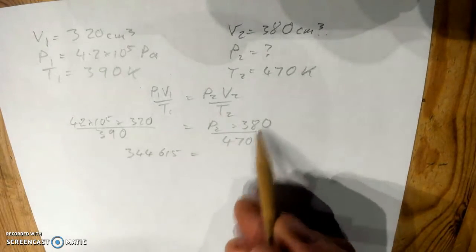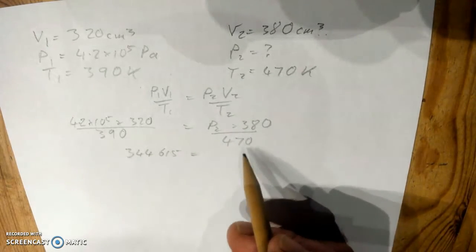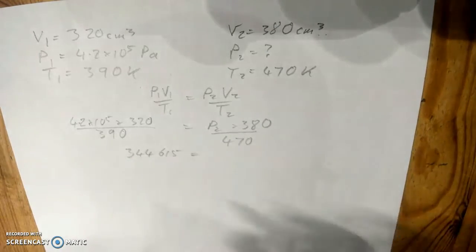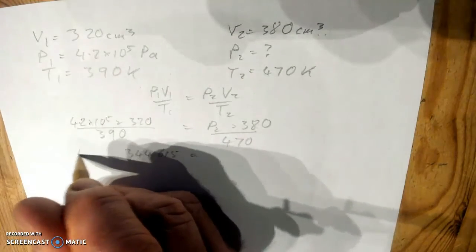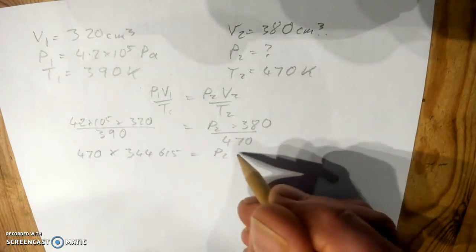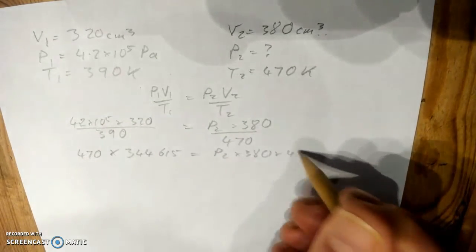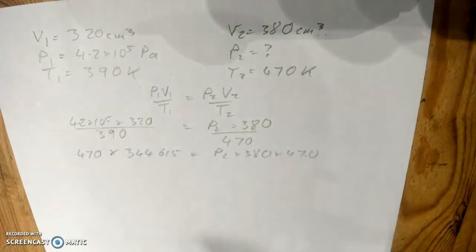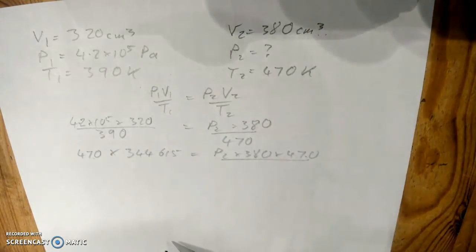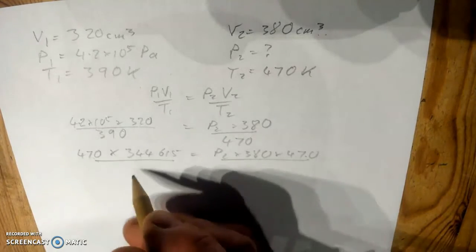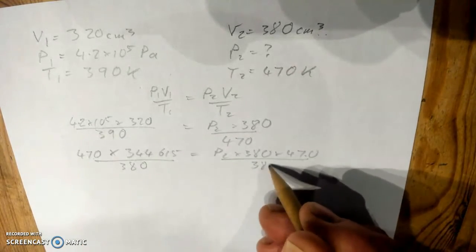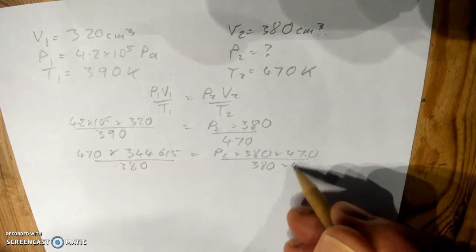Now, to get rid of those two things, what I'm going to do is, like you're doing maths, is whatever's on the bottom, I'm going to multiply both sides of the equation by that, so 470 times that, so we've got P2 times 380 times 470, so I've just multiplied both sides of the equation by that number. We've got 380 on the top, so in that case we divide both sides by 380, divided by 380, and we've also still got the 470.